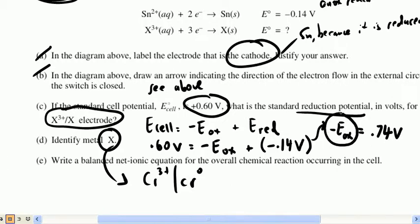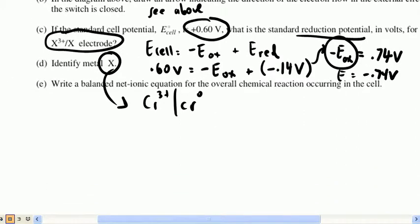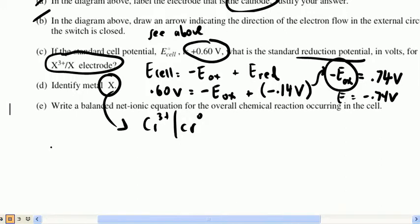So, that means that this here is the ox because this is the reversed version. So, if you flip it around, you get the reduction potential of that, which would be negative 0.74 volts. But it doesn't really matter because you go to the chart and chromium is the only thing there that is 0.74 volts. So, that means that X is being oxidized and X equals Cr.